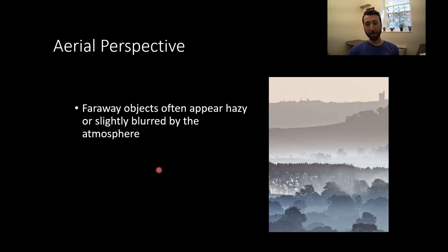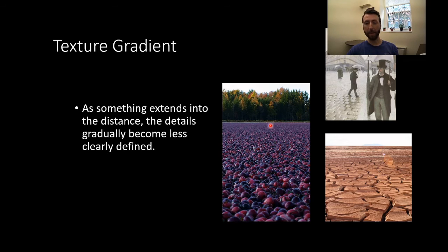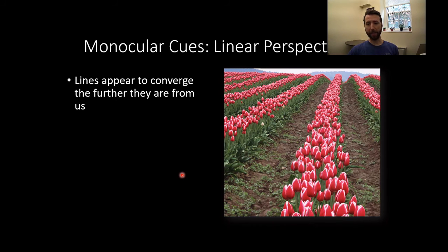Aerial perspective is the idea that far-away objects often appear hazy or slightly blurred by the atmosphere, so the blurrier something is, the further away it tends to be. Texture gradient works as it sounds: as something extends into the distance, details become gradually less clearly defined. Standing in a field of cranberries, the more closely together the dots are and the less detailed they are, the further away we infer them to be. Similarly on cobblestones or a cracked desert, as a texture pattern fades toward the horizon it becomes less well-defined and more closely packed, allowing us to infer greater distance.